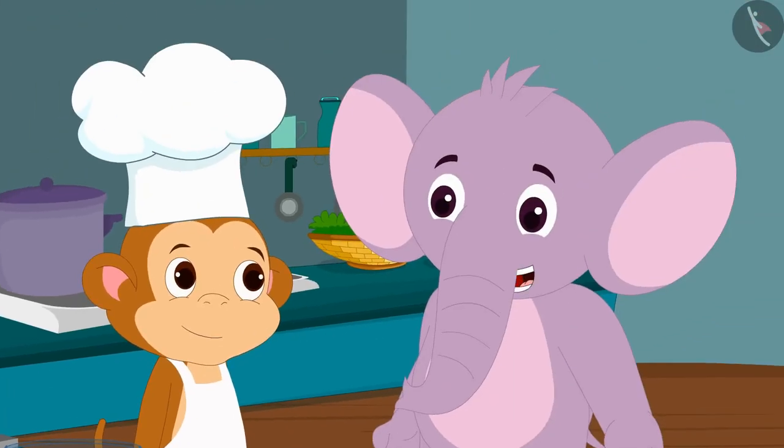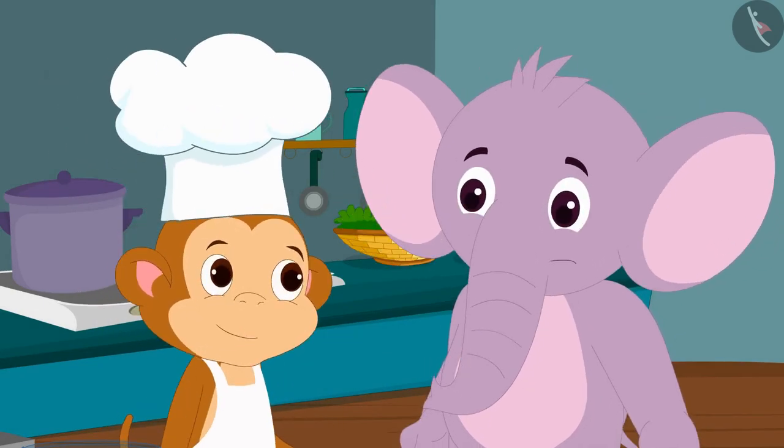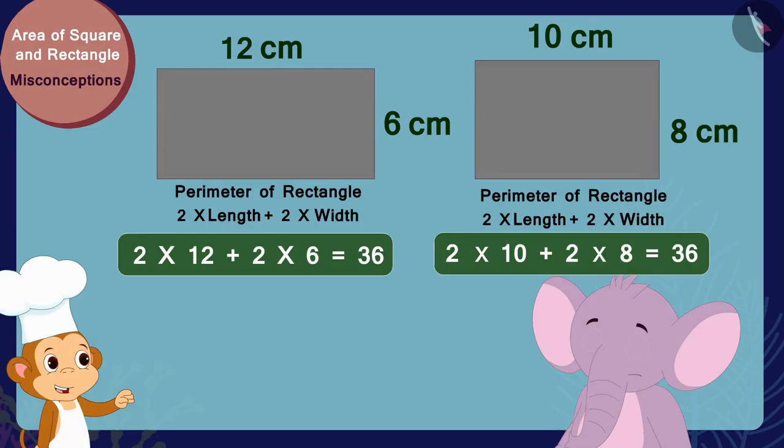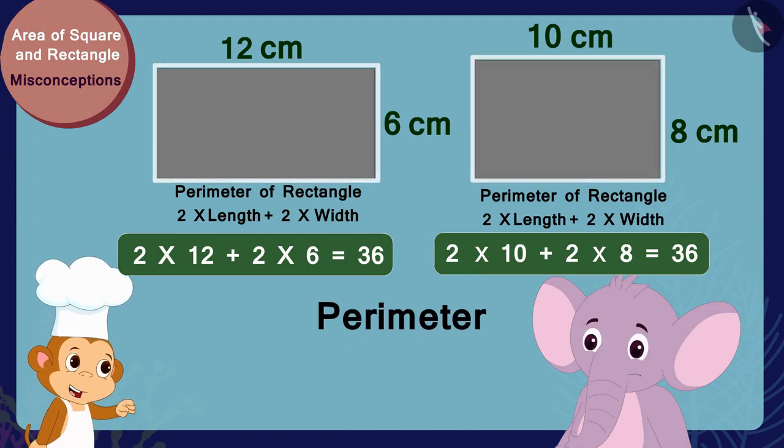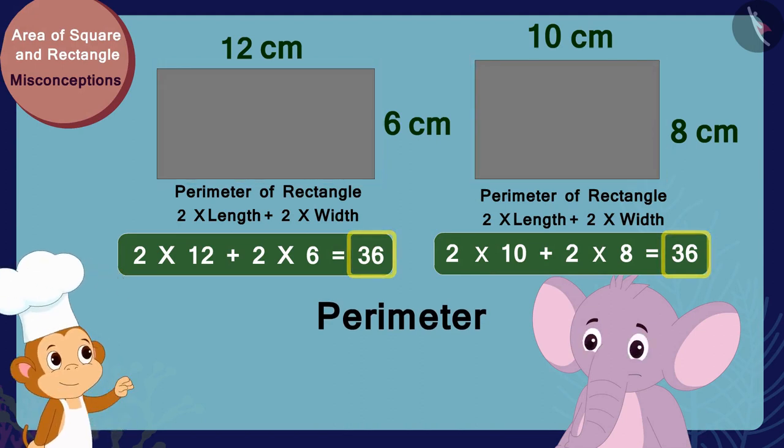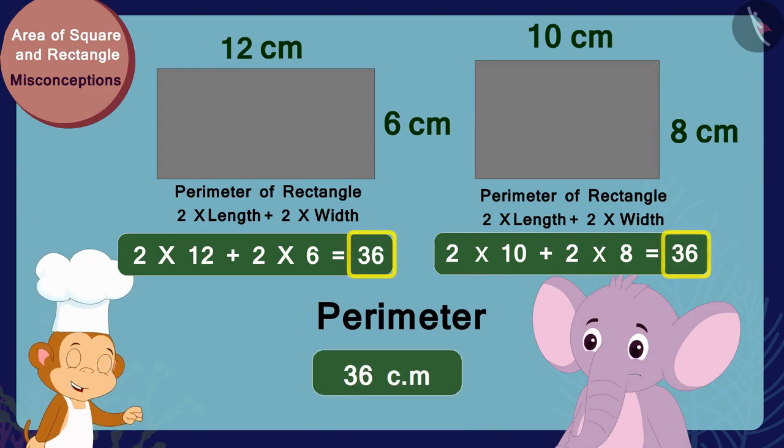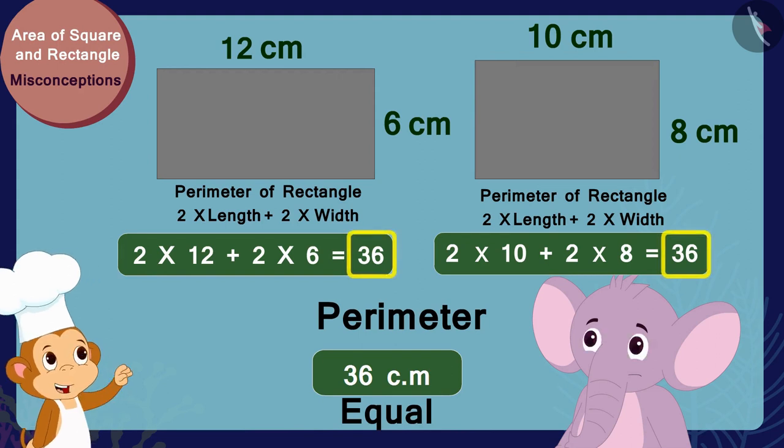Appu, I have found the perimeter of both trays in this way, and look, the perimeters of both are exactly the same, 36 centimeters. This means that both trays are exactly the same.